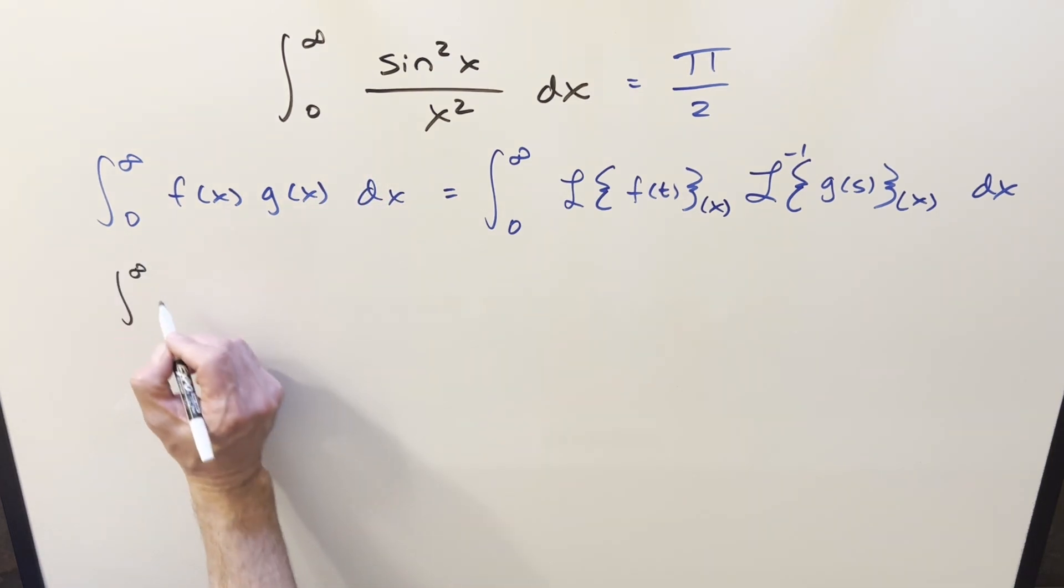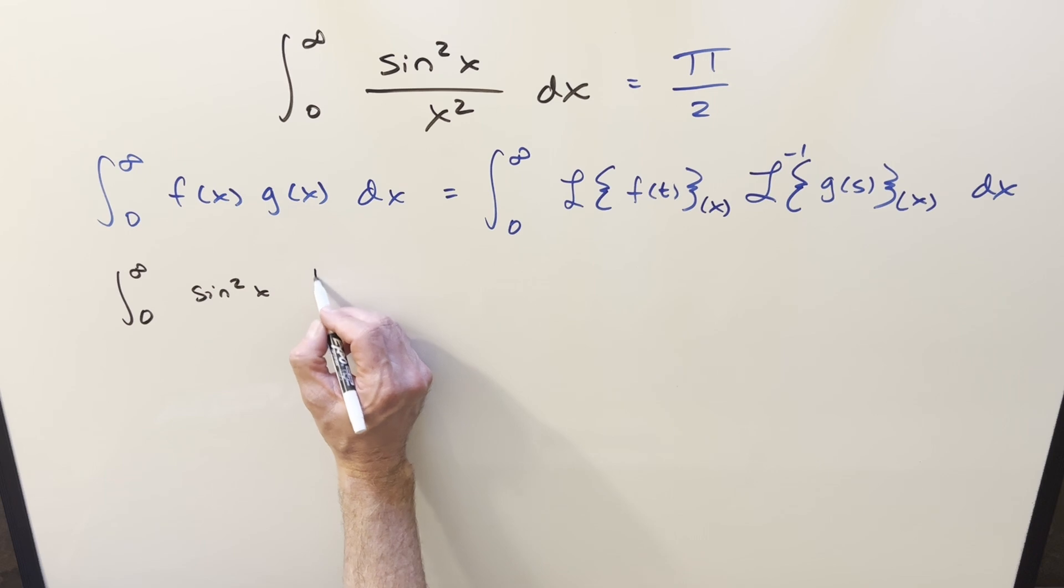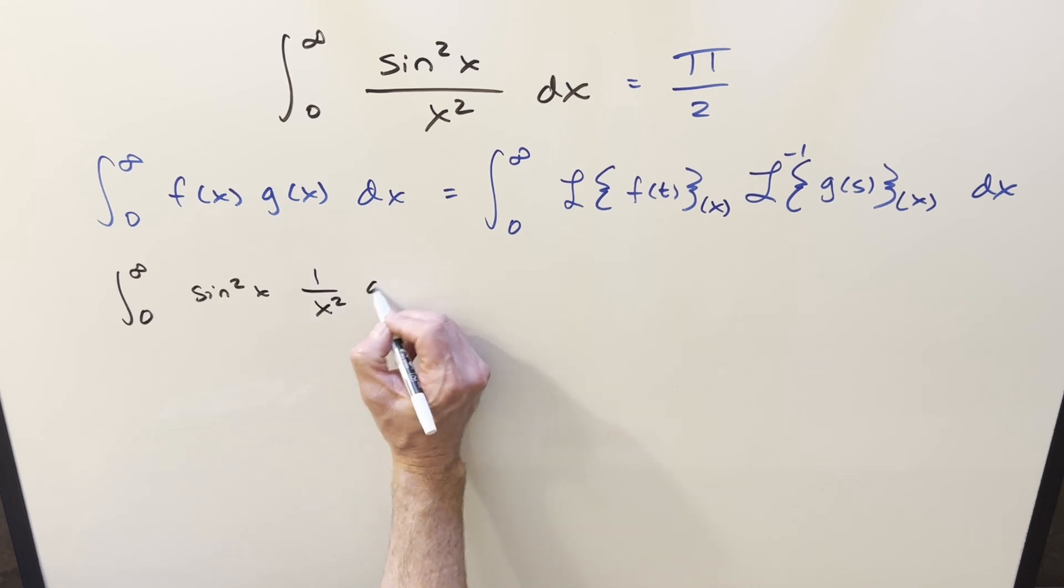So to do it, how I'll break it up is for the f of x value, I'm going to call that sine squared x. And then for our g of x, that's going to be this 1 over x squared.